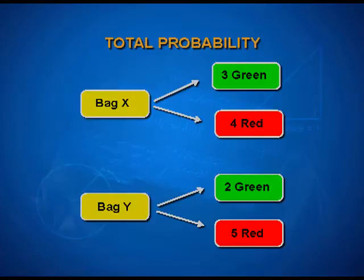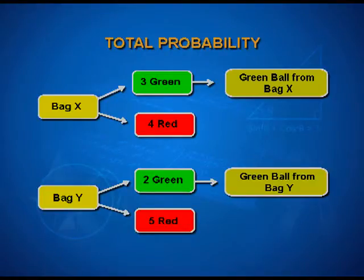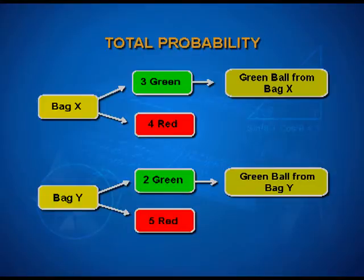So far you have been dealing with situations where we had only one bag with two or more colored balls in it. What changes now? You may select bag X and then draw a ball out of it, or bag Y and then draw a ball out of it which may be green. So we want to find the probability of getting a green ball from bag X or the probability of a green ball from bag Y. Therefore, the probability of a green ball drawn at the end of this experiment will be the sum of the two probabilities — the probability of a green ball from bag X and the probability of a green ball from bag Y.